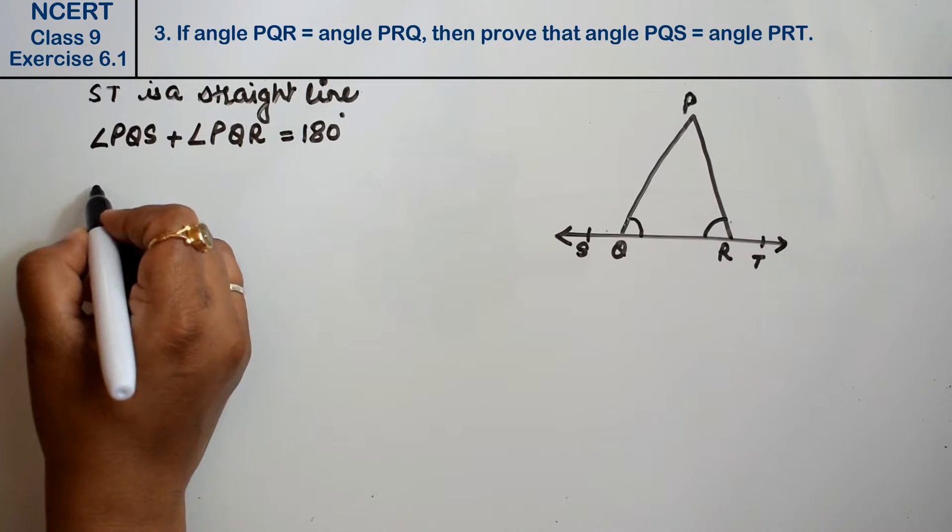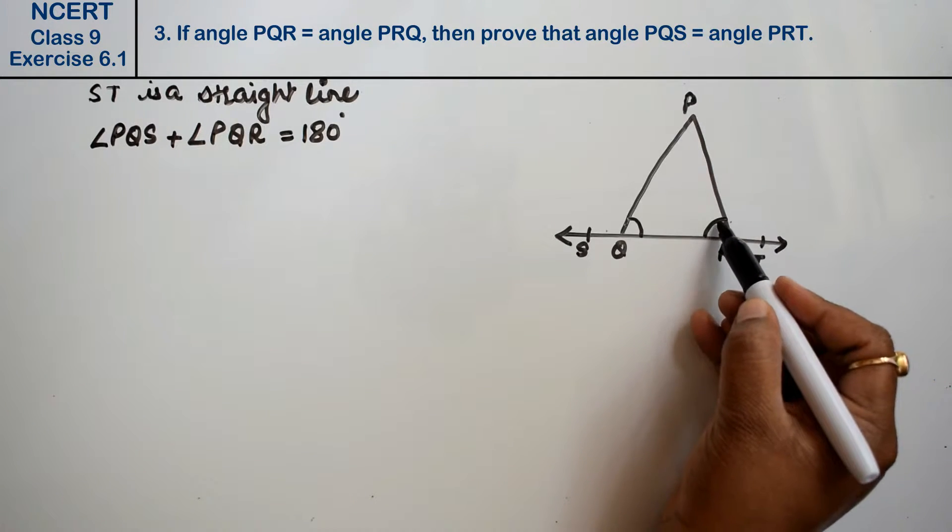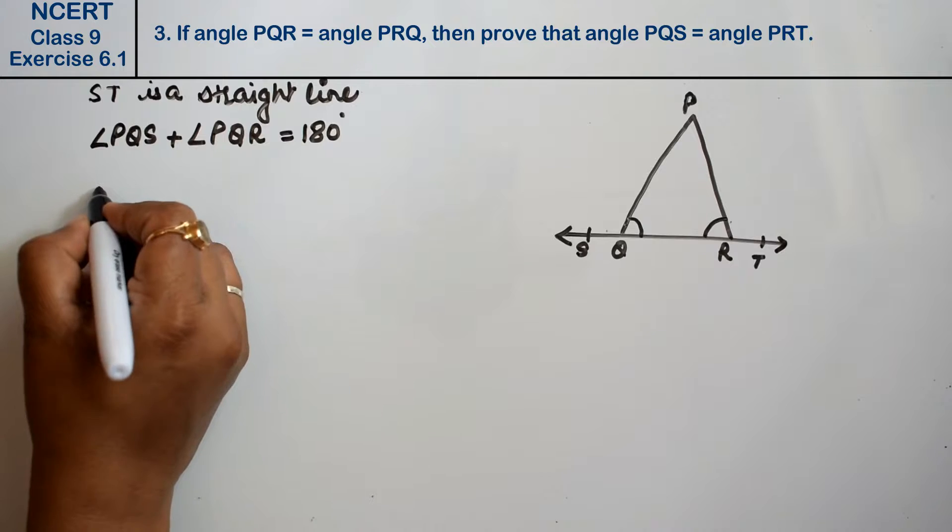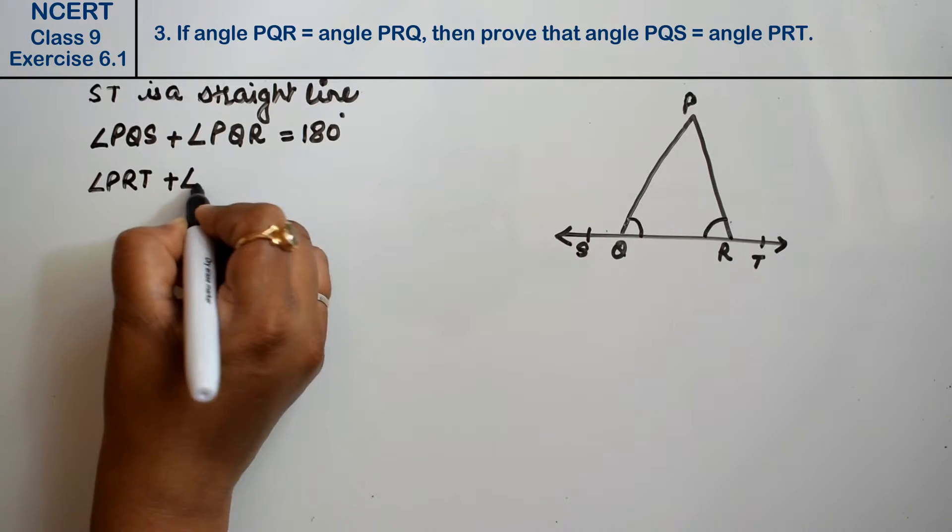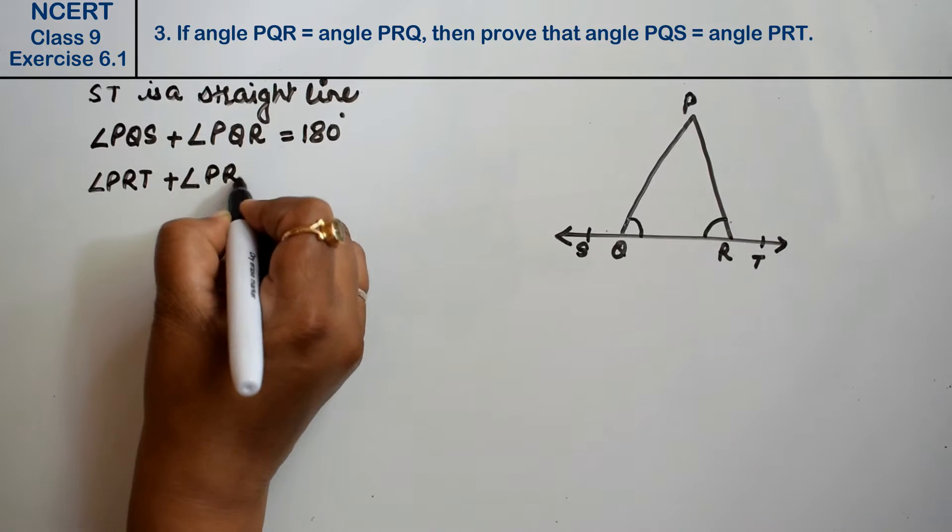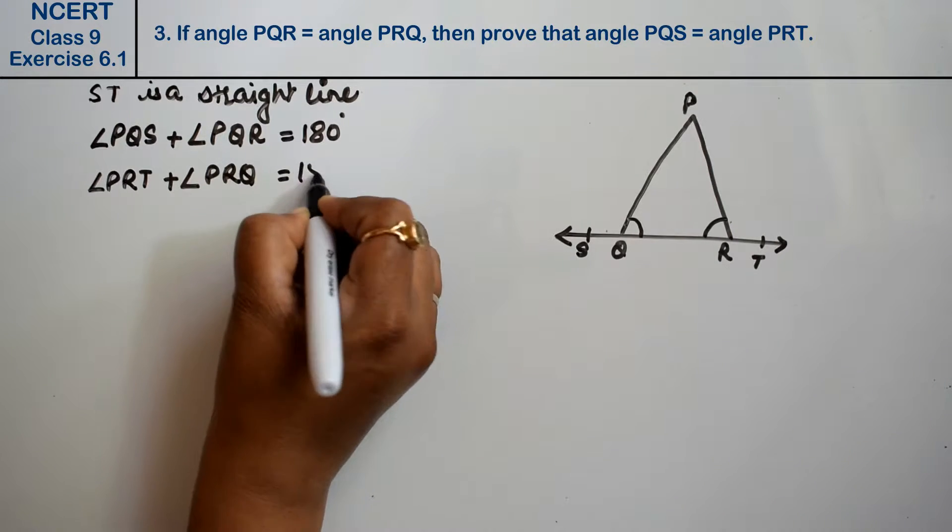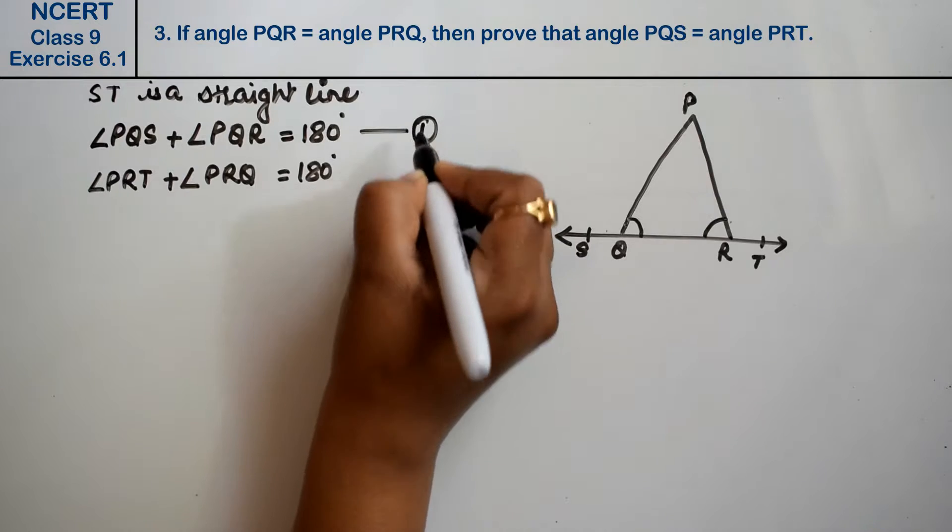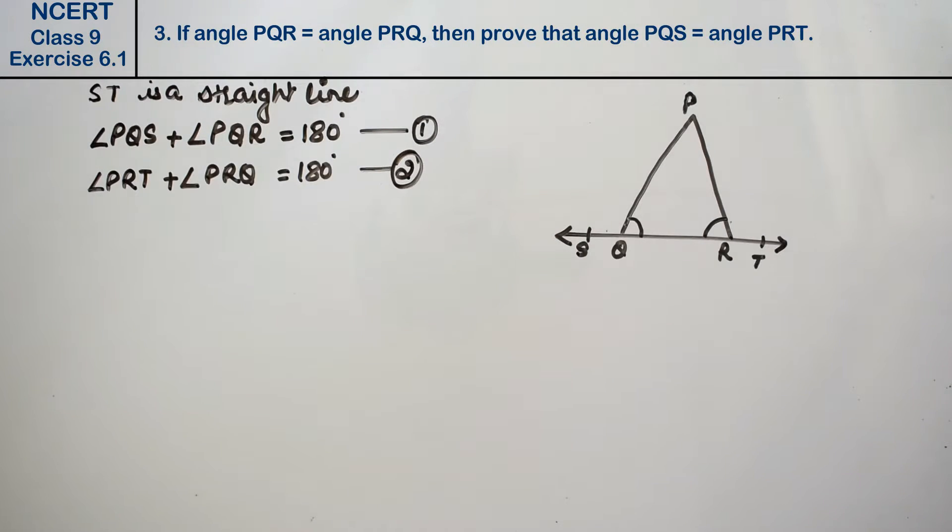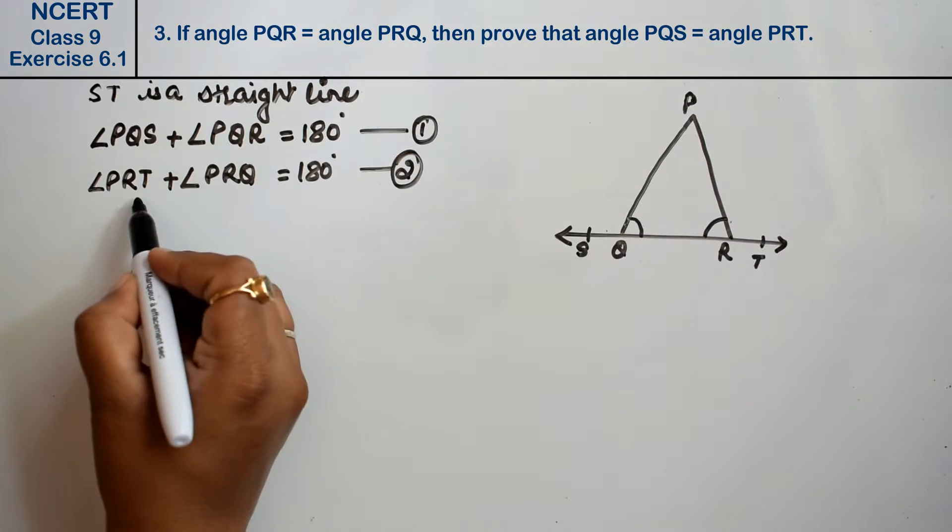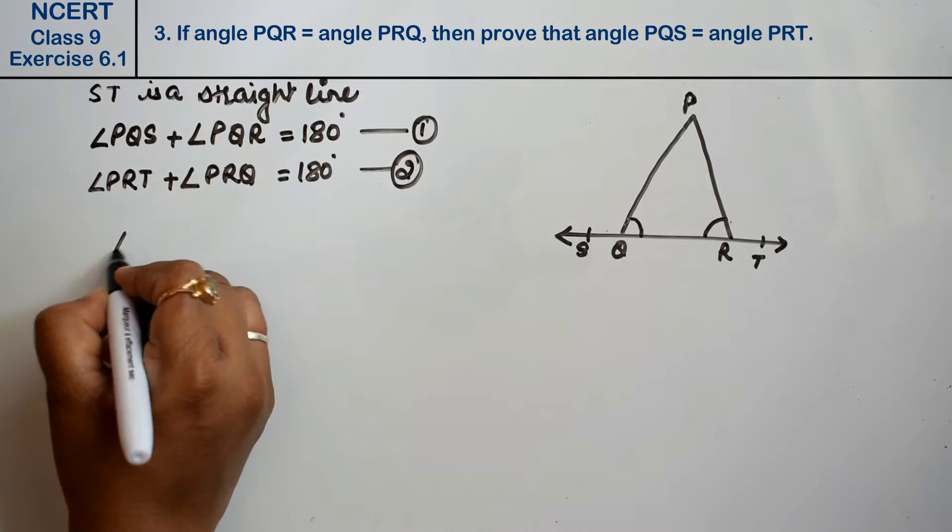Similarly, because ST is a straight line, this angle plus this angle, that is angle PRT plus angle PRQ, equals 180 degrees. This is our first equation, this is our second equation.